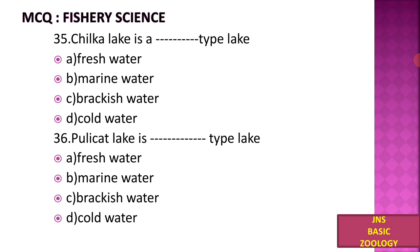Chilka Lake is which type of lake? A) Freshwater, B) Marine water, C) Brackish water, D) Cold water. Chilka Lake is a well-known brackish water lake and is found in the Ganjam district.